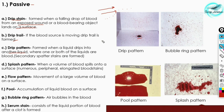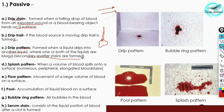The third subtype is the drip pattern formed when a liquid drips into another liquid. There is already a blood stain present on a surface and another drop of blood drops onto that stain — one or both of the liquids may be blood. Secondary spatter stains are also formed in this case — these are secondary pattern stains formed from a major primary pattern stain.